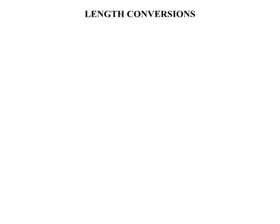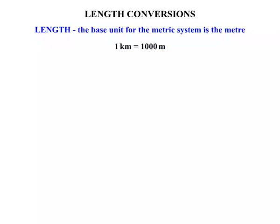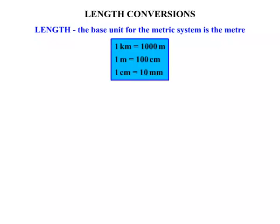In this lesson we're looking at length conversions. The base unit for the metric system is the metre. One kilometre equals one thousand metres. One metre equals one hundred centimetres. And one centimetre equals ten millimetres.